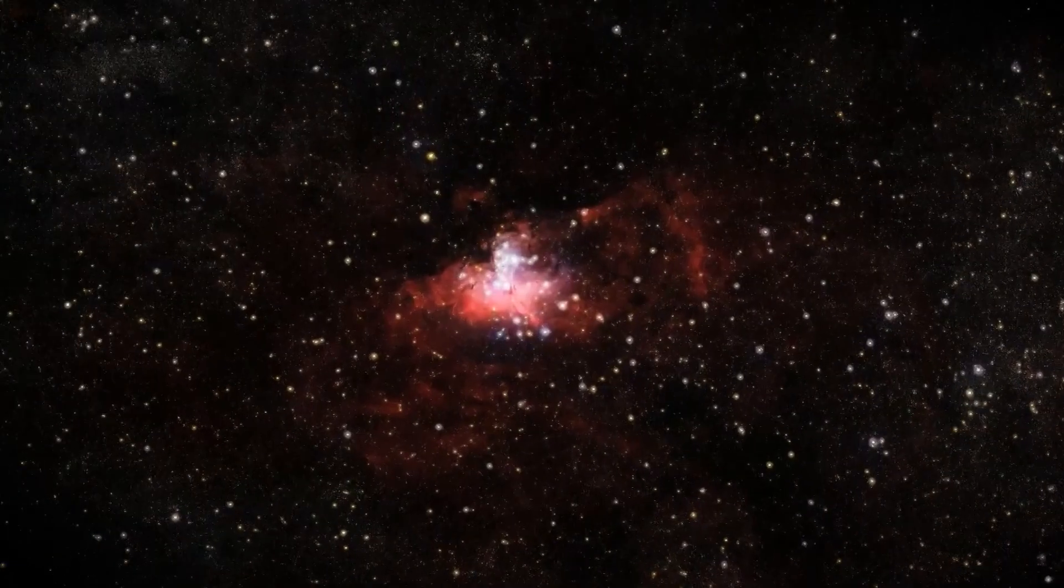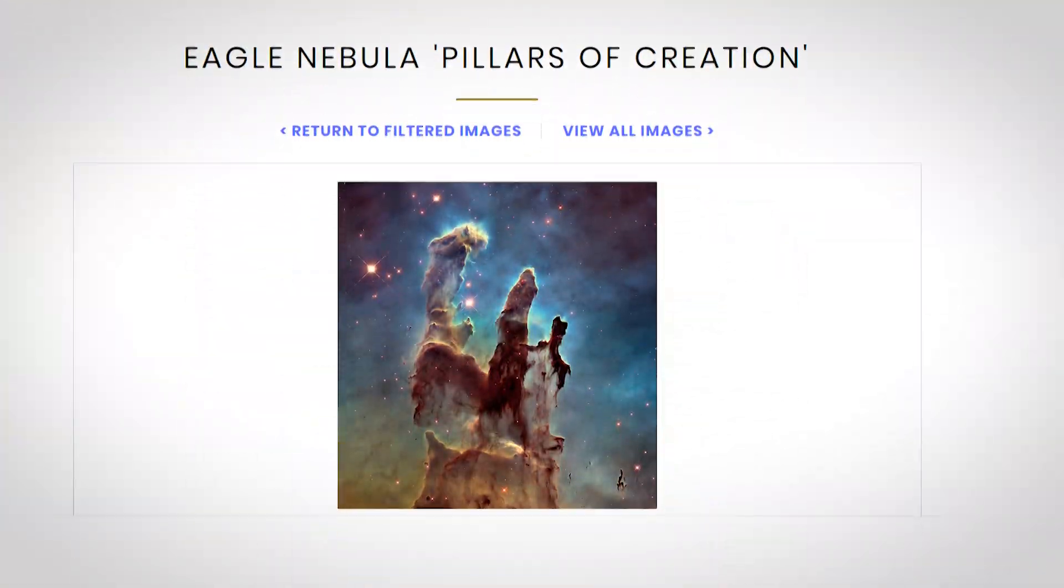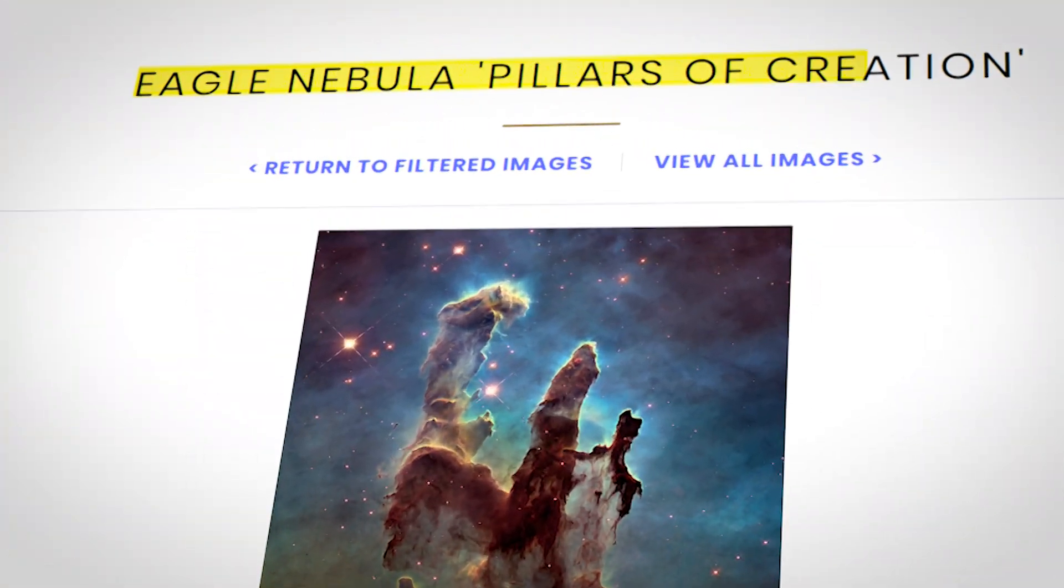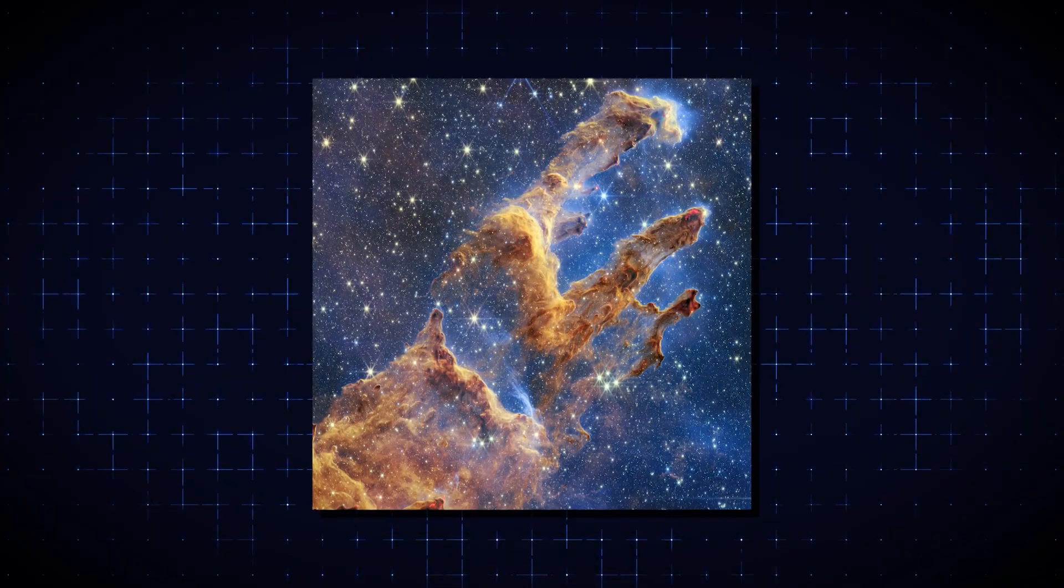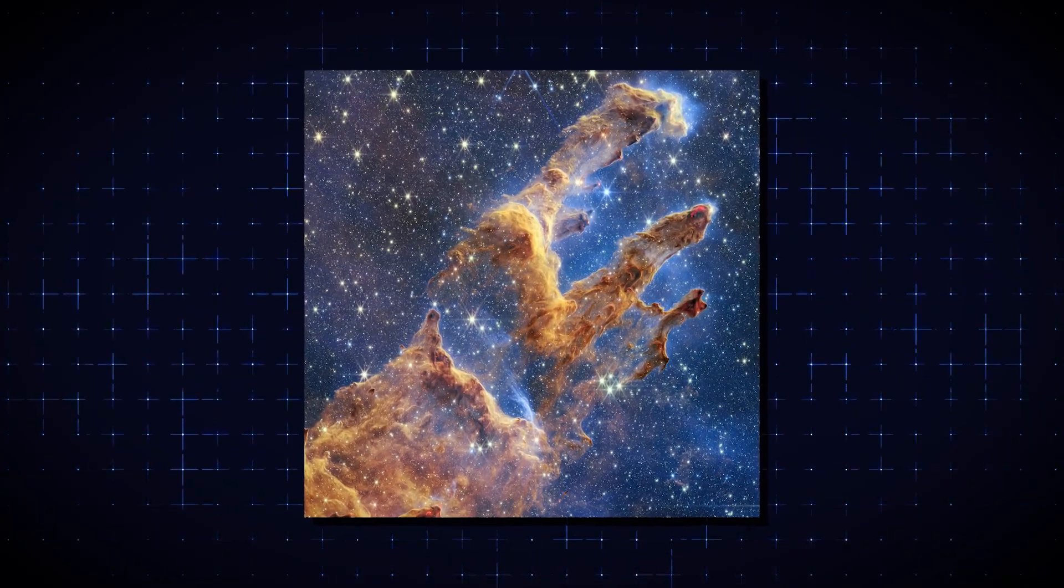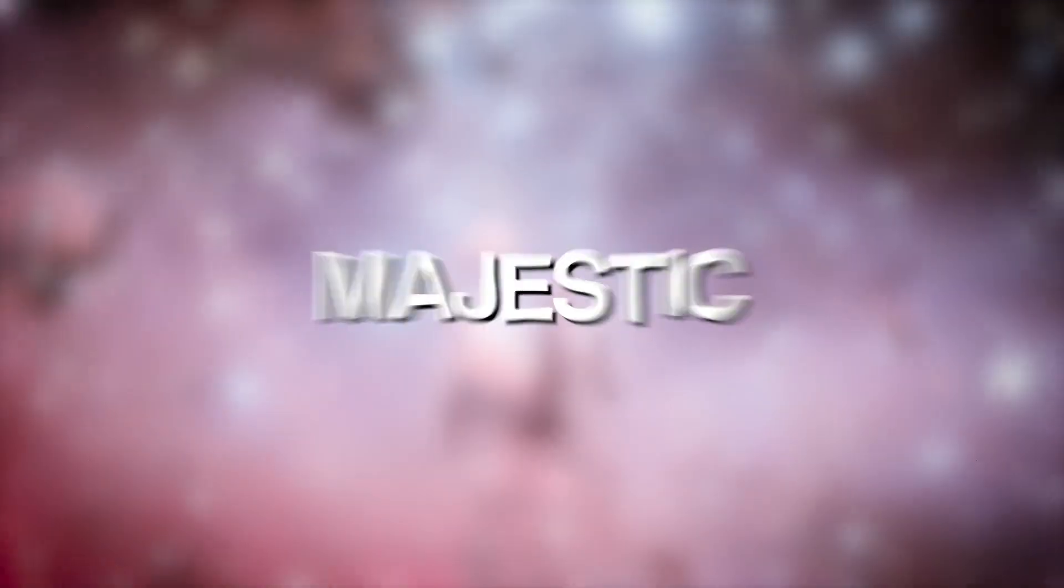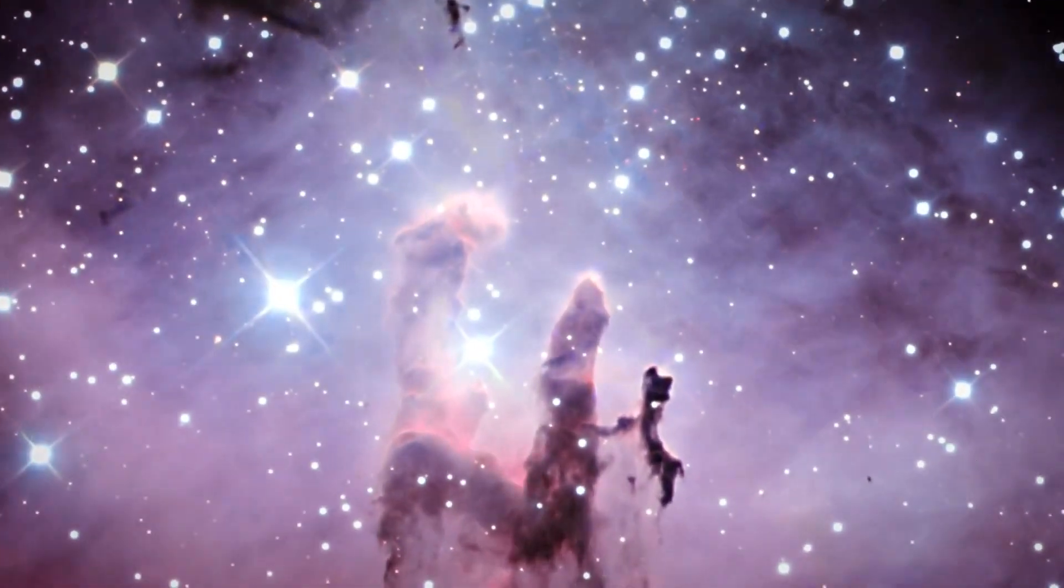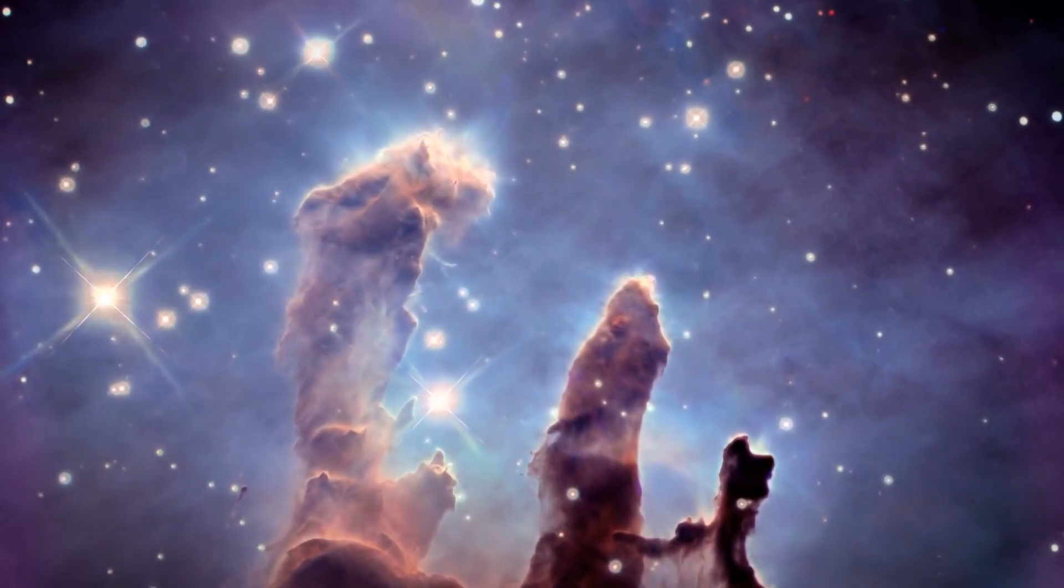For those of you who don't know, the Pillars of Creation in the Eagle Nebula is one of the most iconic images taken by Hubble. It's a picture of interstellar gas and dust that looks like a bunch of elephant trunks and seems like a still straight out of a Marvel film.